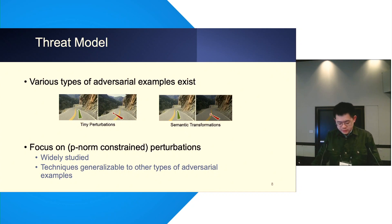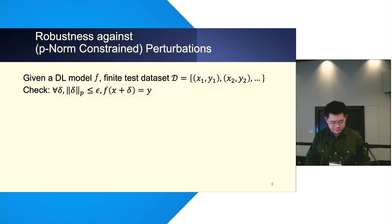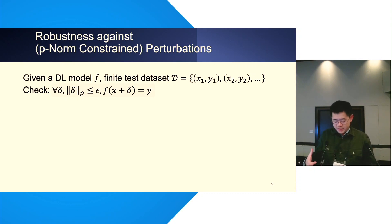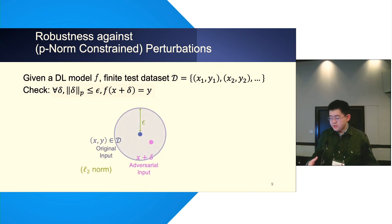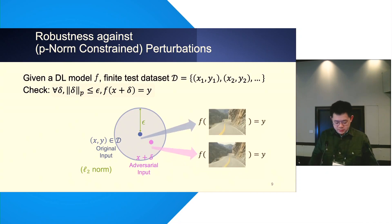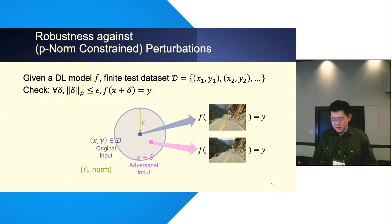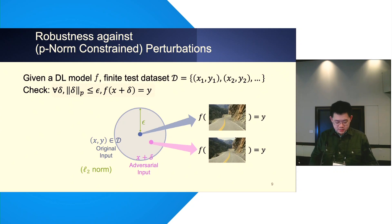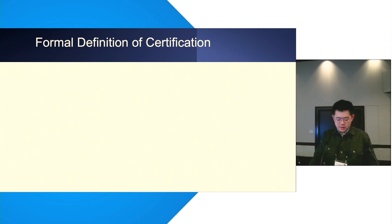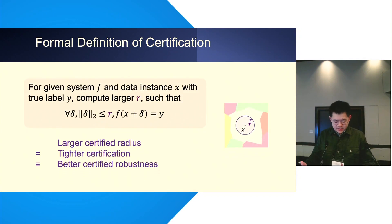As a formal definition, for P-norm constrained perturbations, we are given a data point X from the test set with a ground truth label Y. We aim to defend against all adversarial examples picked from a ball surrounding the data point with radius epsilon. It reduces to checking whether, for any perturbed adversarial input from the ball, the model F will always predict correctly.